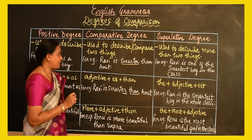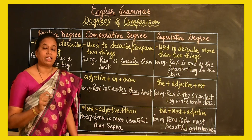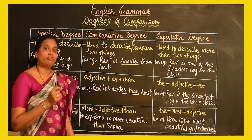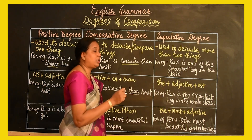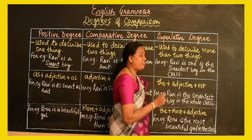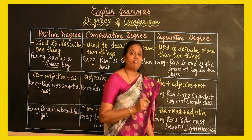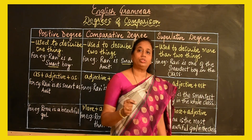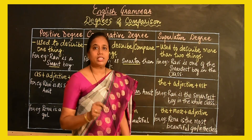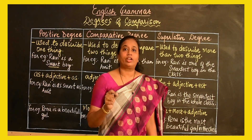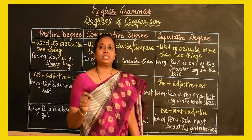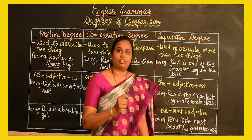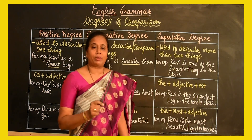In the comparative degree, 'clever' becomes 'cleverer' — we add 'er' to the adjective. Similarly, in the superlative degree, we say 'Ravi is the cleverest boy in the class,' adding 'est' to 'clever.' These are examples of regular adjectives where the adjective stays the same; we simply add 'er' in the comparative and 'est' in the superlative.